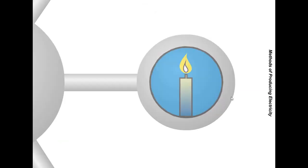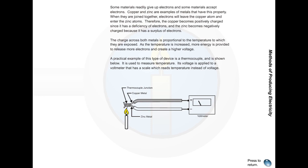Heat. Some materials readily give up electrons, and some materials accept electrons. Copper and zinc are examples of metals that have this property. When they are joined together, electrons will leave the copper atom and enter the zinc atoms. Therefore, the copper becomes positively charged since it has a deficiency of electrons, and the zinc becomes negatively charged because it has a surplus of electrons. The charge across both metals is proportional to the temperature to which they are exposed.